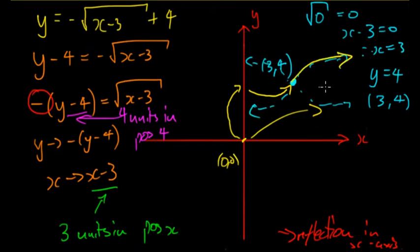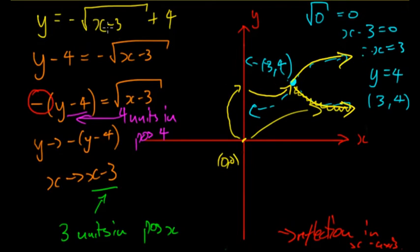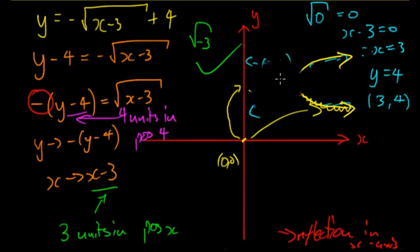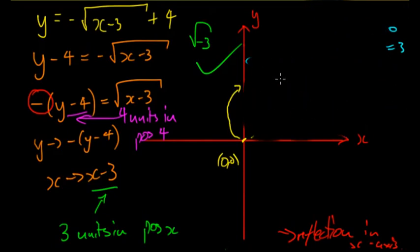Originally the graph looks like the standard square root curve. There has been a reflection in the x-axis, so it flips downward. There hasn't been a reflection in the y-axis. To verify: when x equals zero we get the square root of negative three, which is undefined — confirming there's no y-intercept, as expected. So the final graph starts at the endpoint three four and curves downward to the right.